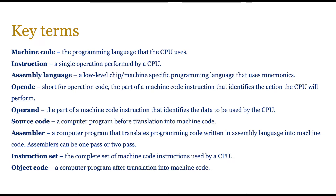Then you've got the source code, assembler, and instruction set, which is the complete set of machine codes, and then the object code. The source code is before translation and the object code is after translation. Make sure that you pause the video and jot these down, and do get back to me if there's something you don't understand.